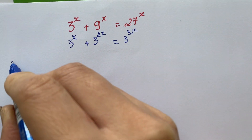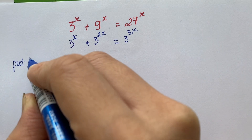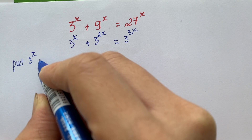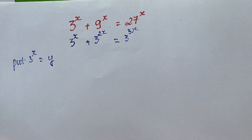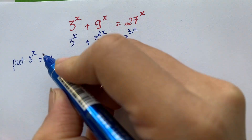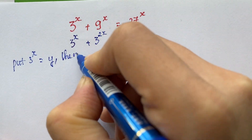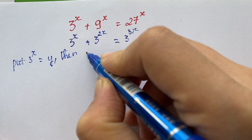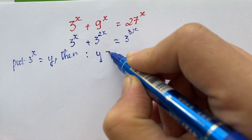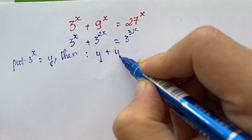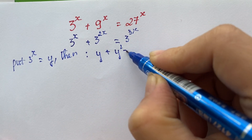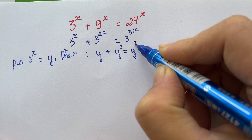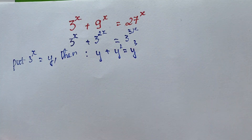You need to put 3 power x equals y. And then we have y plus y squared equals y cubed.